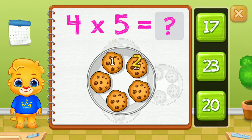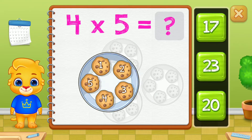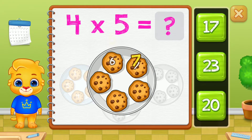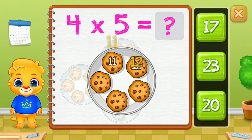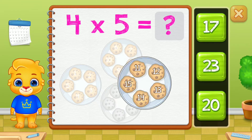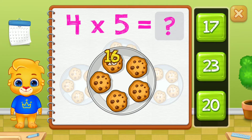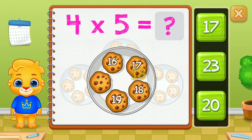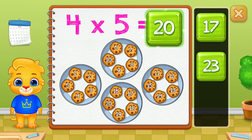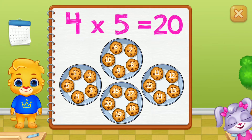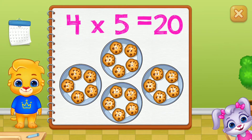1, 2, 3, 4, 5, 6, 7, 8, 9, 10, 11, 12, 13, 14, 15, 16, 17, 18, 19, 20. 4 groups of 5 equals 20.